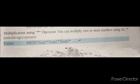Now let us discuss the multiplication operator. You can multiply two or more numbers using the asterisk sign operator. The format is: SHOW NUMBER1 * NUMBER2 * NUMBER3, then press the Enter key to execute the multiplication operator.